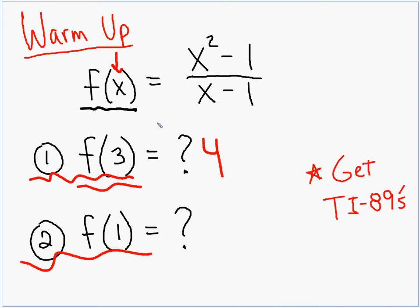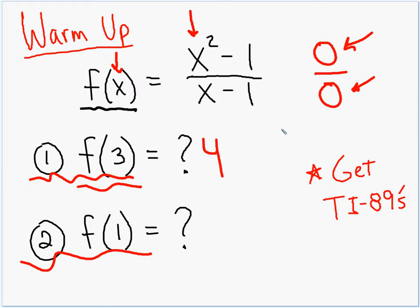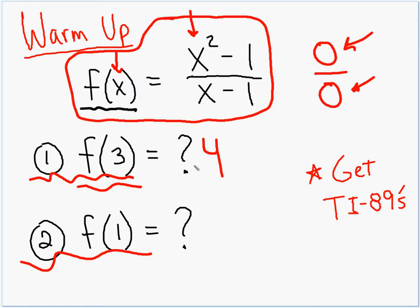What about f(1)? In the numerator, 1 squared is 1, 1 minus 1 is 0 — zeros are allowed in numerators. But the problem is in the denominator: 1 minus 1 is also 0. Dividing by 0 is very bad, and 0 divided by 0 is extra bad. Later, we'll hear that called indeterminate form. The naughty number is 1 because it gives us this indeterminate form, 0 divided by 0.